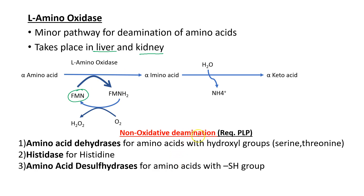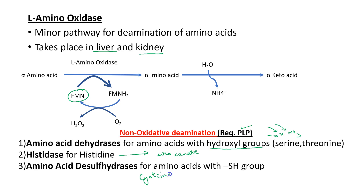Non-oxidative deamination also requires pyridoxal phosphate. For example, for hydroxyl-containing amino acids like serine and threonine, dehydrases help in non-oxidative deamination in which removal of the hydroxyl group and ammonia both occur. Similarly, the histidase enzyme converts histidine to urocanate. In the case of sulphur-containing amino acids like cysteine, desulphydrases help in formation of pyruvate by removing the SH group and the amino group.